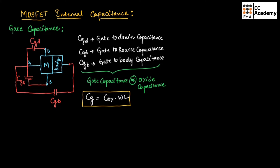When we consider a MOSFET, it can operate in three regions: cutoff region, active region, and saturation region. Now let us see the gate capacitance in these regions of operation.